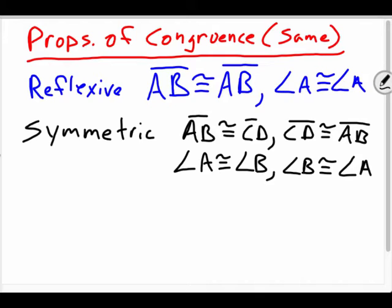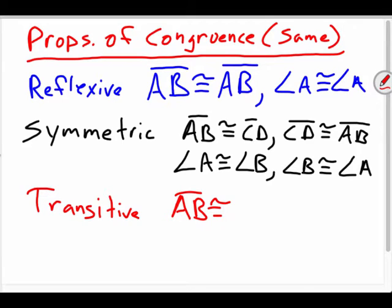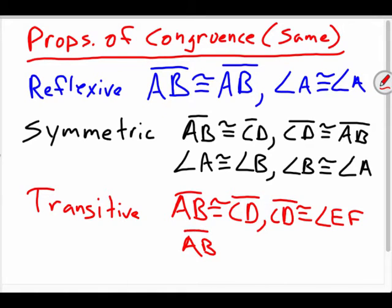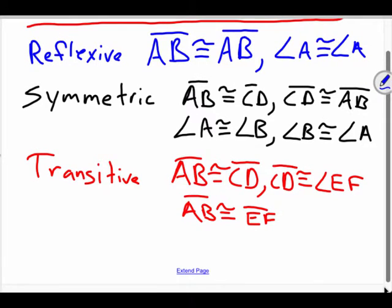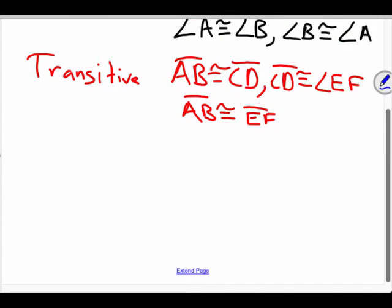And then the last one is transitive property. Notice that all of these have a congruent symbol in them. So the transitive property of congruence goes like this. If you have line segment AB is congruent to CD, and CD is congruent to EF, well, then you can cut out the middle man and just say that AB is congruent to EF. That makes sense, right? Why do you have angles in there? Yeah, you put angles in the line for EF. Oh, why don't, oh, you're right. Because I'm going to do the same thing with angles in a second. Good catch, though, girls.